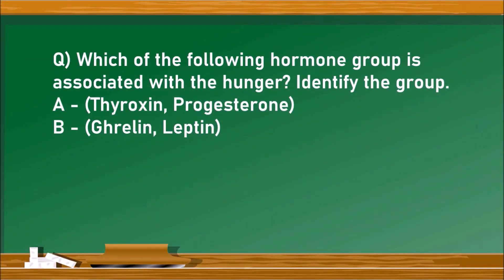The first question: which of the following hormone group is associated with hunger? Identify the group. There are two groups here, group A and group B. They contain some hormones. We have to identify the group which contains the hormones related to hunger.